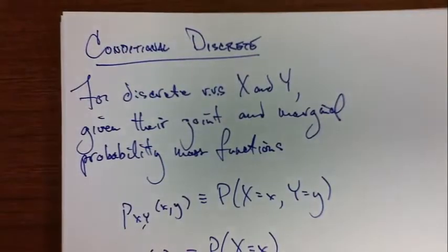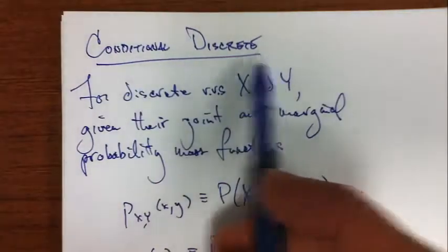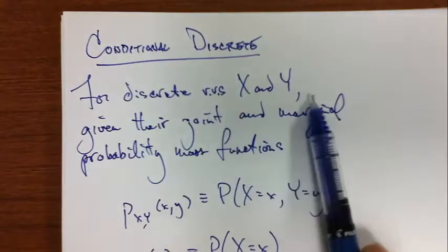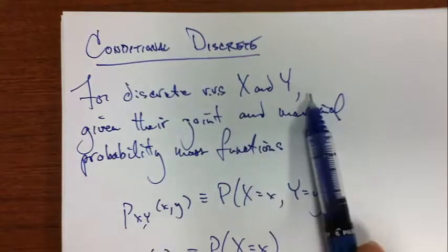My name is Matt Jones. I'll be your professor for the next few minutes. Conditional discrete random variables. Let's say you have a couple of discrete random variables, x and y.